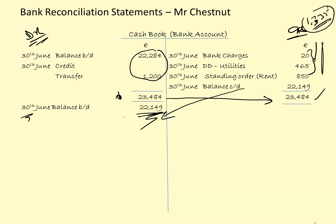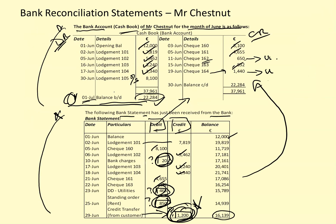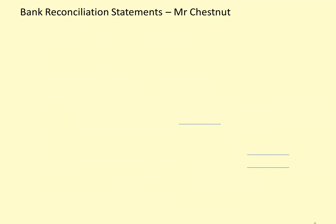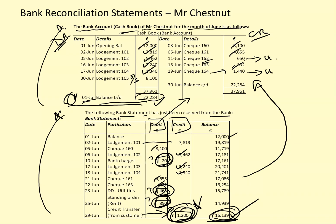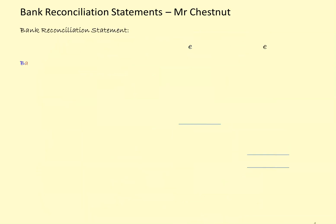That is the corrected and updated cash book bank account for Mr. Chestnut — the actual amount of money he has available. The slight issue is that the bank statement shows a figure of 16,139, so we now have to reconcile our updated corrected figures with that figure. We will set up a bank reconciliation statement, starting with the balance per the bank statement: 16,139.